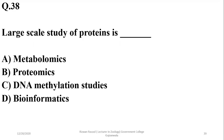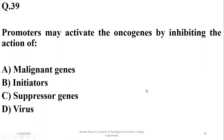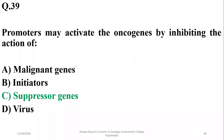Question 38: The large-scale study of proteins is called proteomics — option B. Question 39: Promoters may activate the oncogenes by inhibiting the action of suppressor genes. If promoters inhibit suppressor genes, and suppressor genes normally inhibit oncogenes, then cancer or tumor can result. So I think the right option is C.